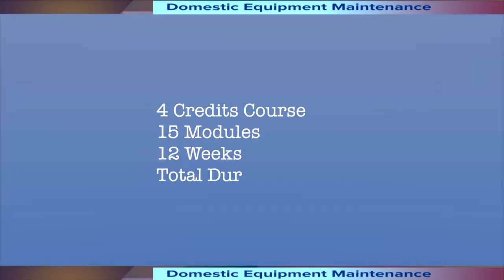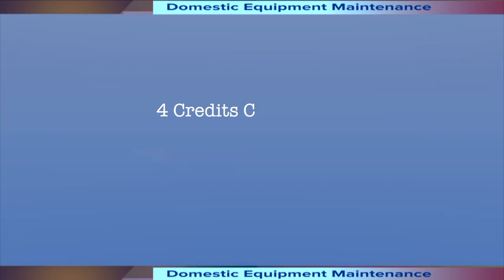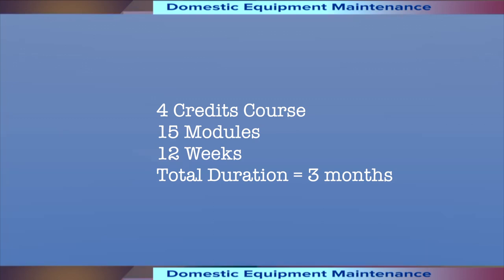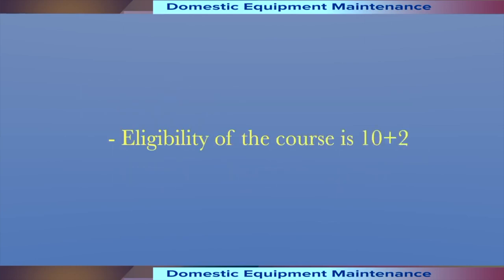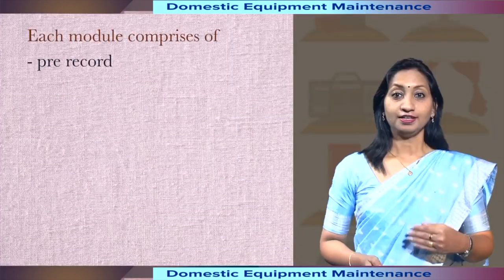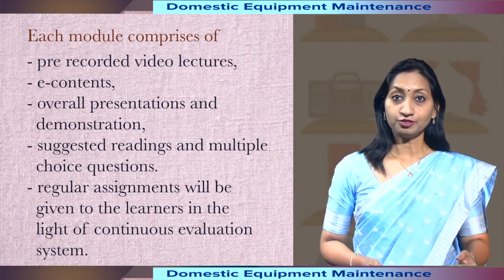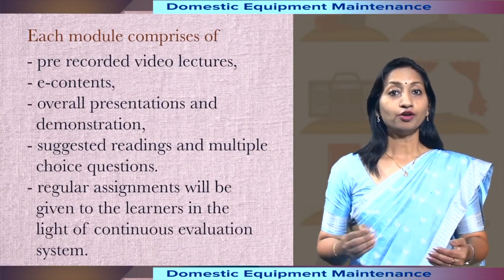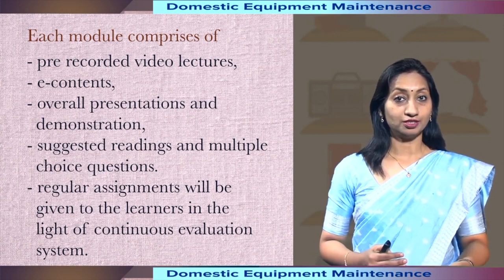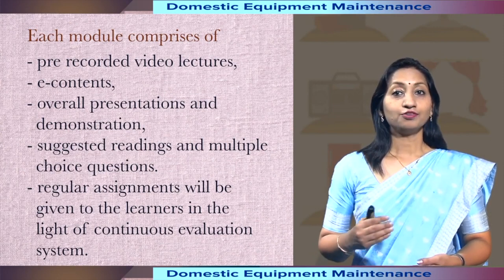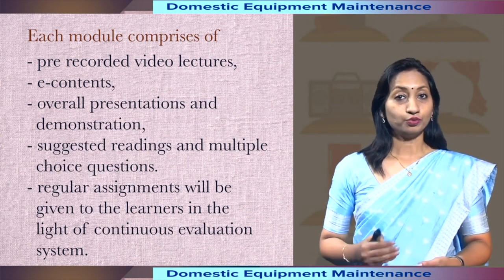It is a 4-credit course having 15 modules which have been divided into 12 weeks. Total duration of the course will be 3 months and it is a multidisciplinary course. The prime eligibility is 10 plus 2. Each module comprises of pre-recorded video lectures, e-contents, overall presentations and demonstrations, suggested readings and multiple choice questions.